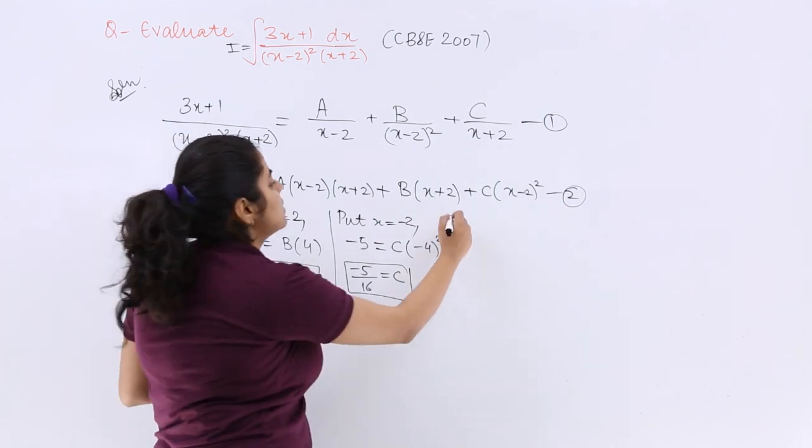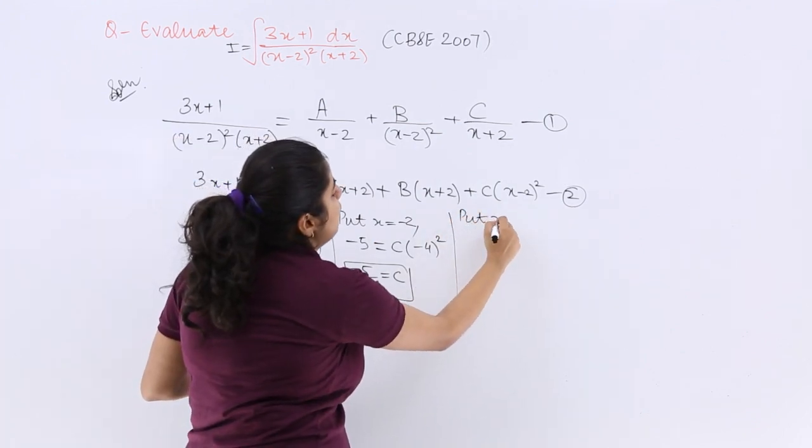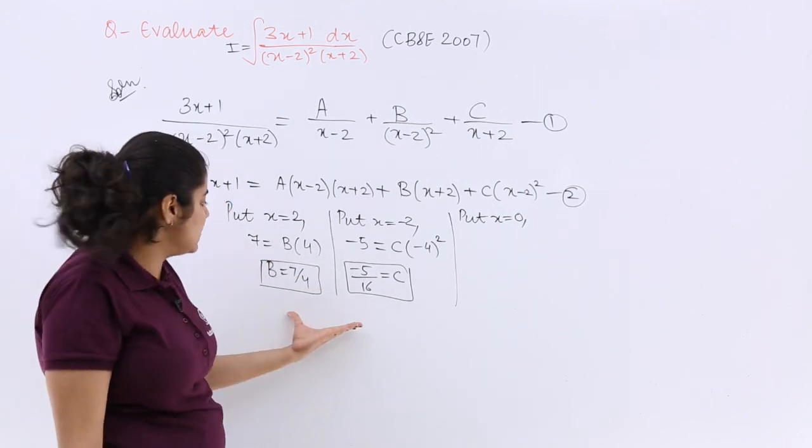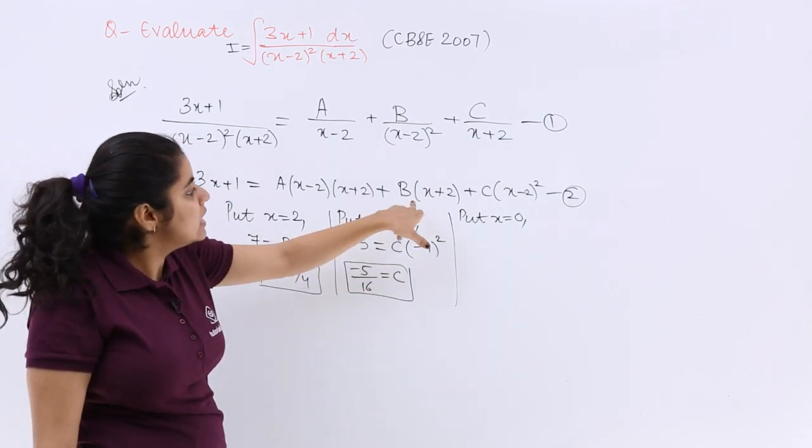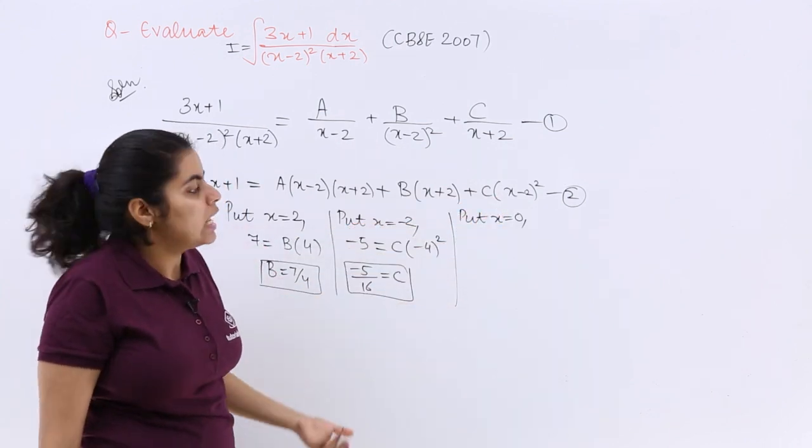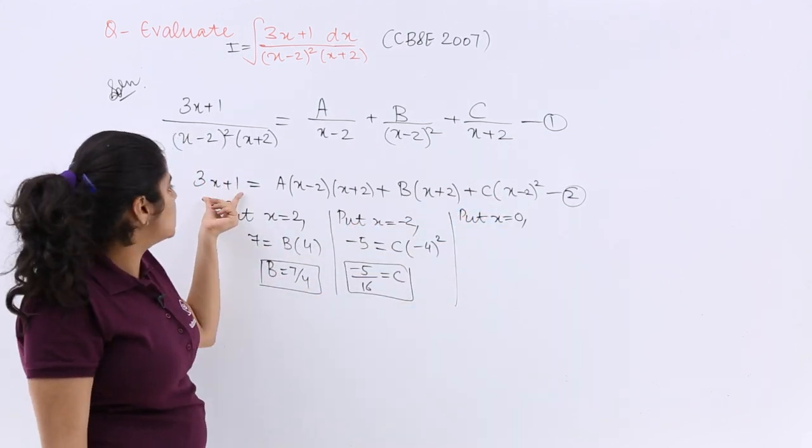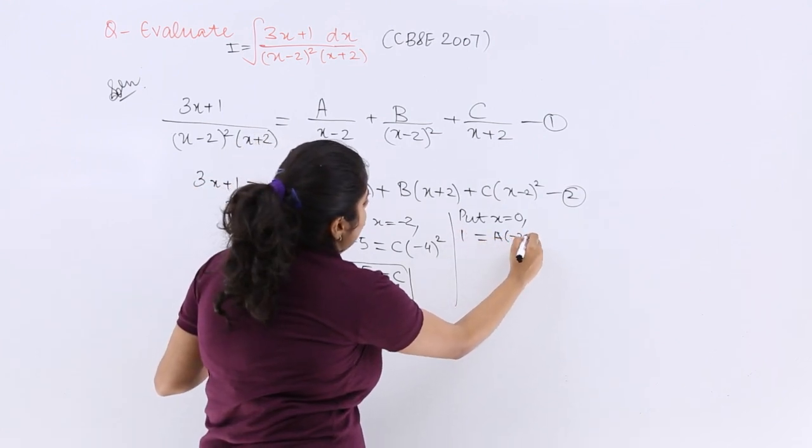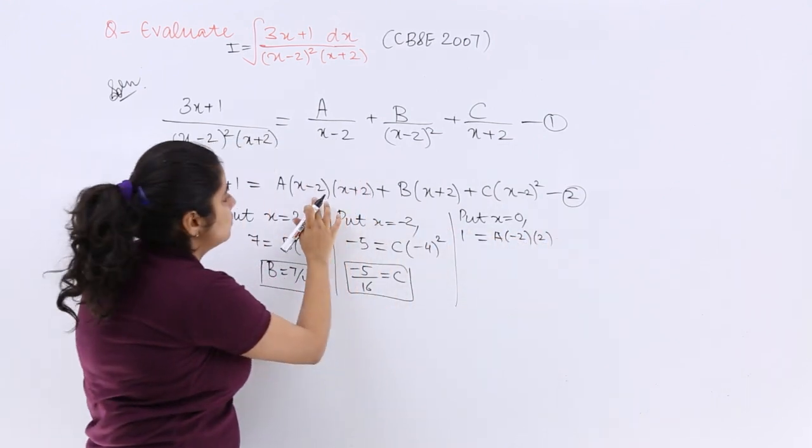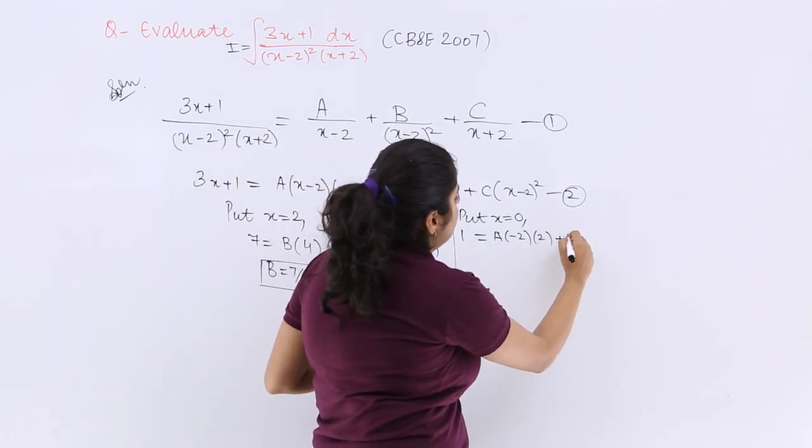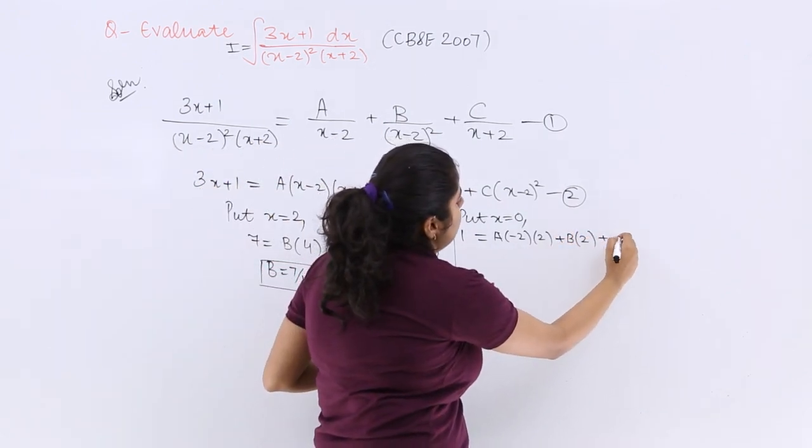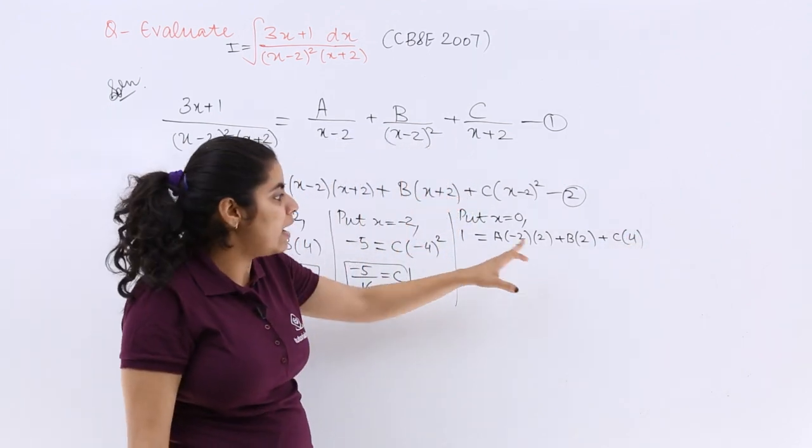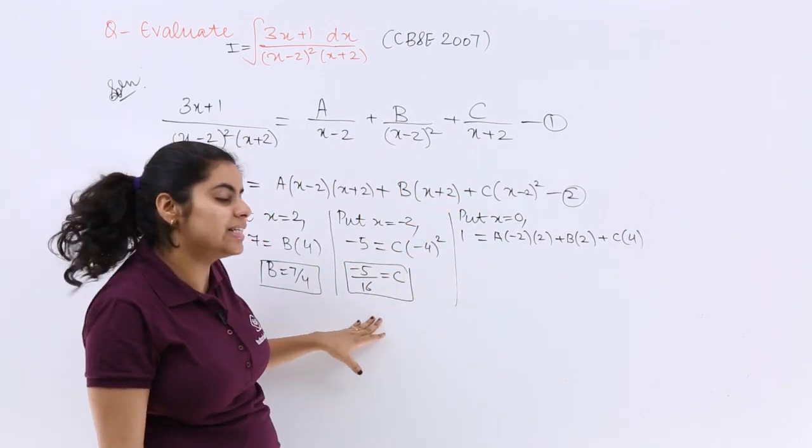For other cases, let me simply put any simple value. Let me put x equals 0, or other ways you can do as B and C are obtained, simply put B and C in this equation and then solve. So now if I put x equals 0, 3 times 0 is 0 plus 1 is 1, equals A multiplied by 0 minus 2, 0 plus 2, as you can see here, plus B multiplied by 0 plus 2, plus C multiplied by 0 minus 2 whole square which is 4. Now you have values of B and C. Let us put those values.